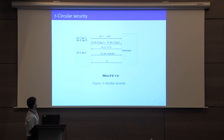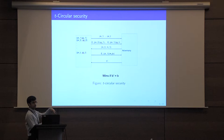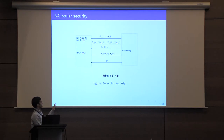More generally, we have the notion of T-circular encryption, in which the challenger has T pairs of public secret keys and the adversary receives all the underlying public keys as well as an encryption of each secret key under its next public key in a circular fashion. Everything remains the same from this point on.